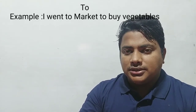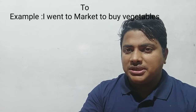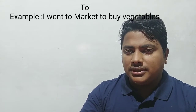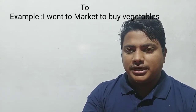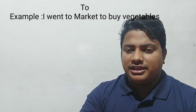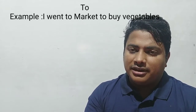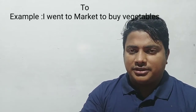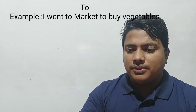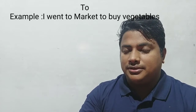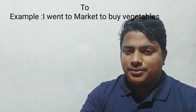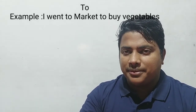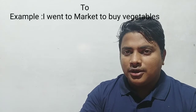For example: 'I went to market to buy vegetables.' Here, 'to' is a linking word. If there is a fill-in-the-blank in a sentence containing 'to', 'have to', 'has to', or 'would rather', you need to know how to complete it correctly — always using the base form of the verb.